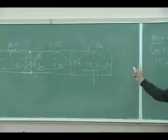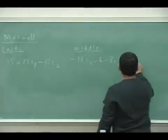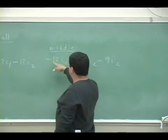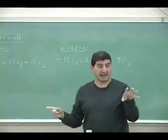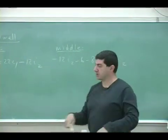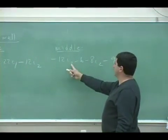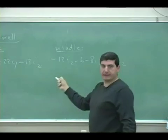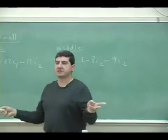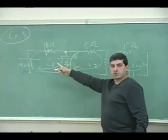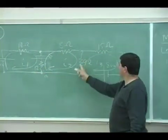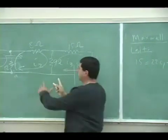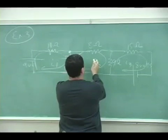And then negative 9I2. Do you see what's happening? When you're doing the middle loop, everything that has I2 is all negative — you're going with it. Negative 12I2, negative 6, negative 8I2, negative 9I2. Then you have to remember that you're going against I1, and you're also going against I3. So you're going against whichever current is not part of your primary loop.